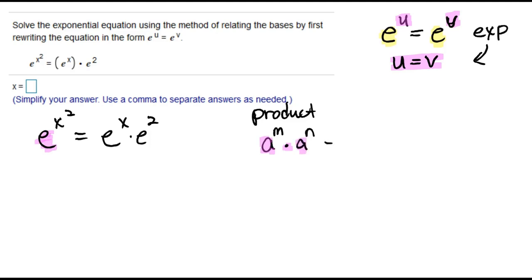So on our equation, I've got the bases being the same and I'm multiplying, and I'm going to add those exponents together to get x plus 2.